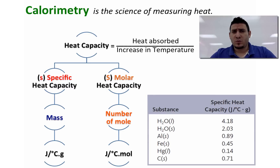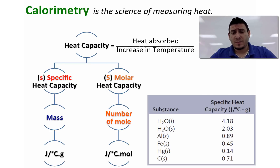Looking at this table of specific heat capacity examples: liquid water has a specific heat capacity of 4.18, solid water (ice) is 2.03, and iron is 0.45. This means we need 4.18 joules to increase the temperature of one gram of liquid water by one degree.